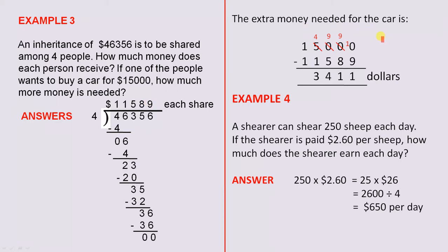Now the extra money needed for the car, if the car costs $15,000, so it's $15,000 minus $11,589, so we still need another $3,411, and there's all the trading in place.